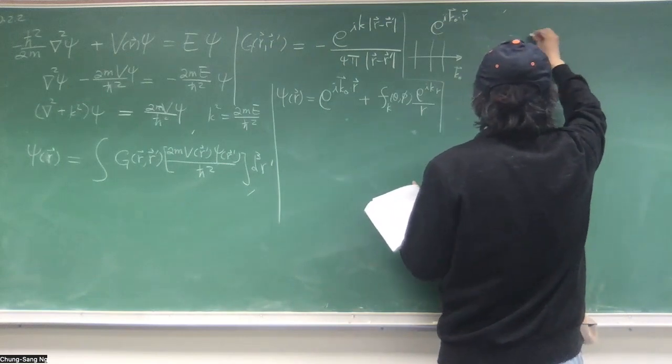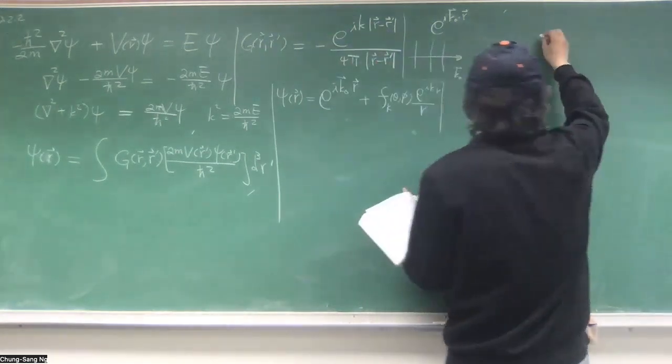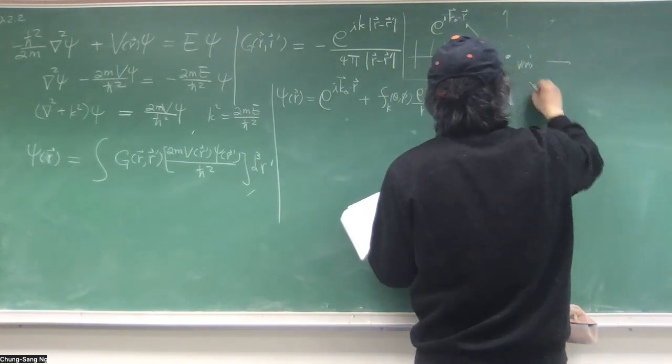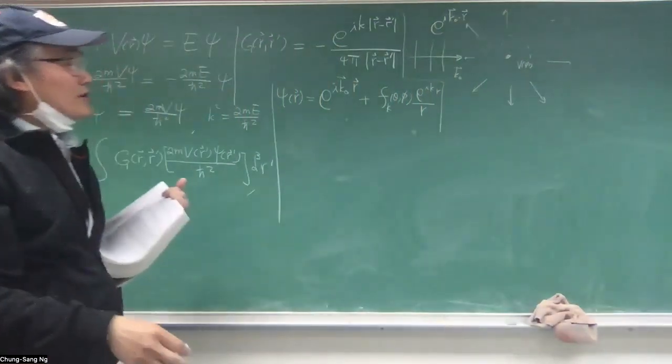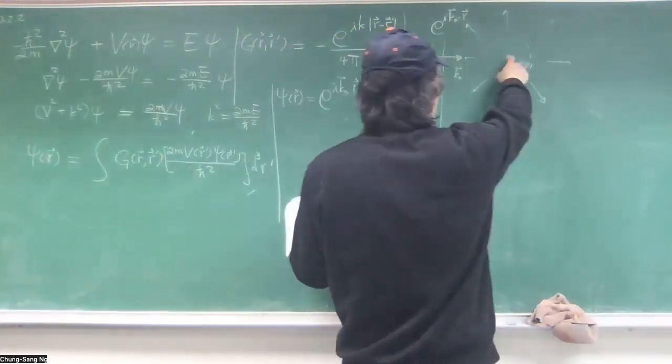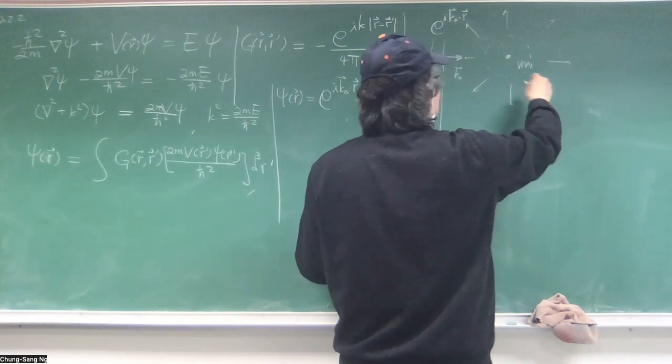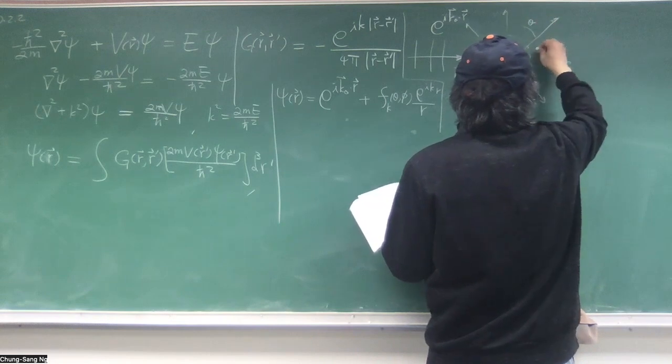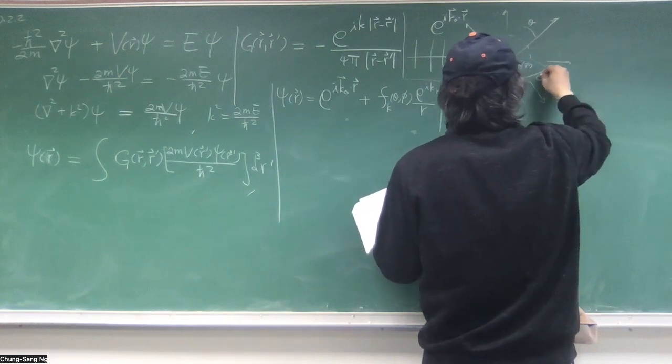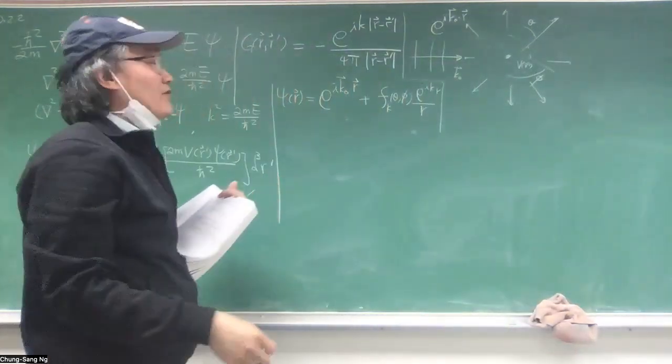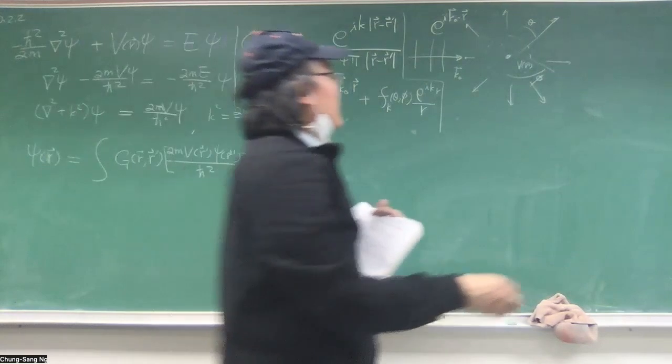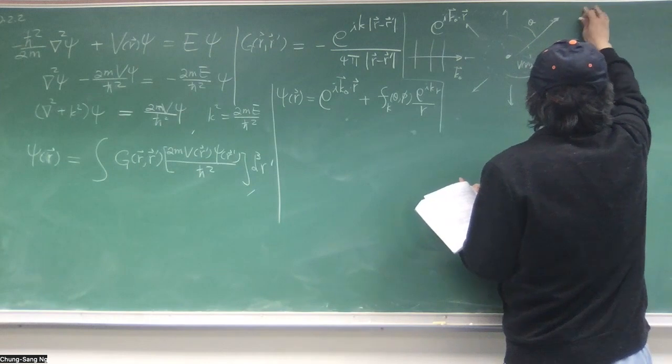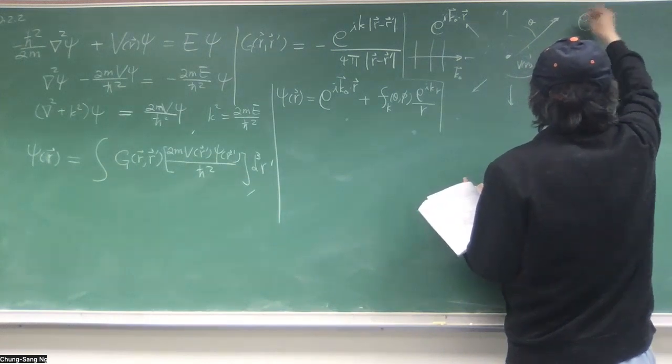And this propagation direction is the direction of this wave vector, and K sub 0. And now after, this is incoming, so supposedly at far away from the potential, it's given by this solution, but then after you interact with the potential, it also produces some scattered wave.